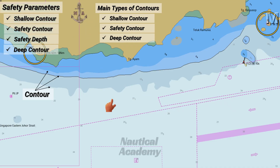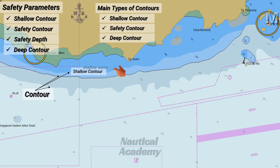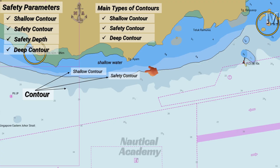In this electronic navigational chart, the line that separates the dark blue and light blue shaded areas is called the shallow contour. It indicates the limit of shallow water, and if a vessel goes beyond this line, she will run aground. The bold line that separates the light blue and gray shaded areas is the safety contour. This line distinguishes safe water from unsafe water, serving as an important boundary for navigation.